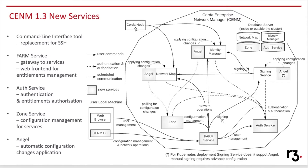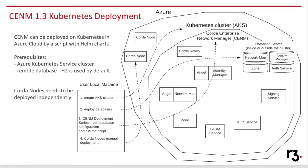This diagram also shows a Corda node. It's worth mentioning that there are no new changes to the way a Corda node interacts with Network Map and Identity Manager. CENM can be deployed on Kubernetes in Azure Cloud. We provide Helm charts in a GitHub repository for each CENM service, and for convenience this is wrapped in one single bash script which can be run from your local PC. The Kubernetes deployment contains all services including a Corda Notary.